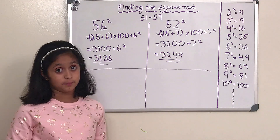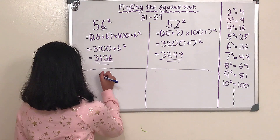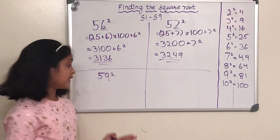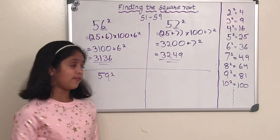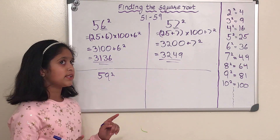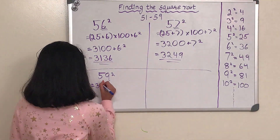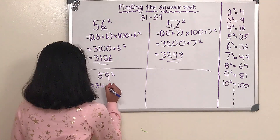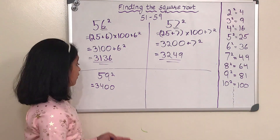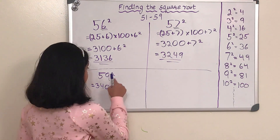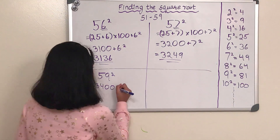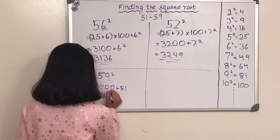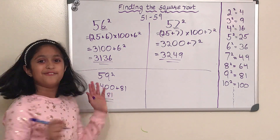Let's do a couple more problems. Our next one is 59 squared. First step: 5 squared is 25. Then add the 9, which gives us 34. Then we have to do 34 times 100, and that gets us 3400. Then we add 9 squared: 9 times 9 is 81. So plus 81, and we get 3481 as our answer to 59 squared.